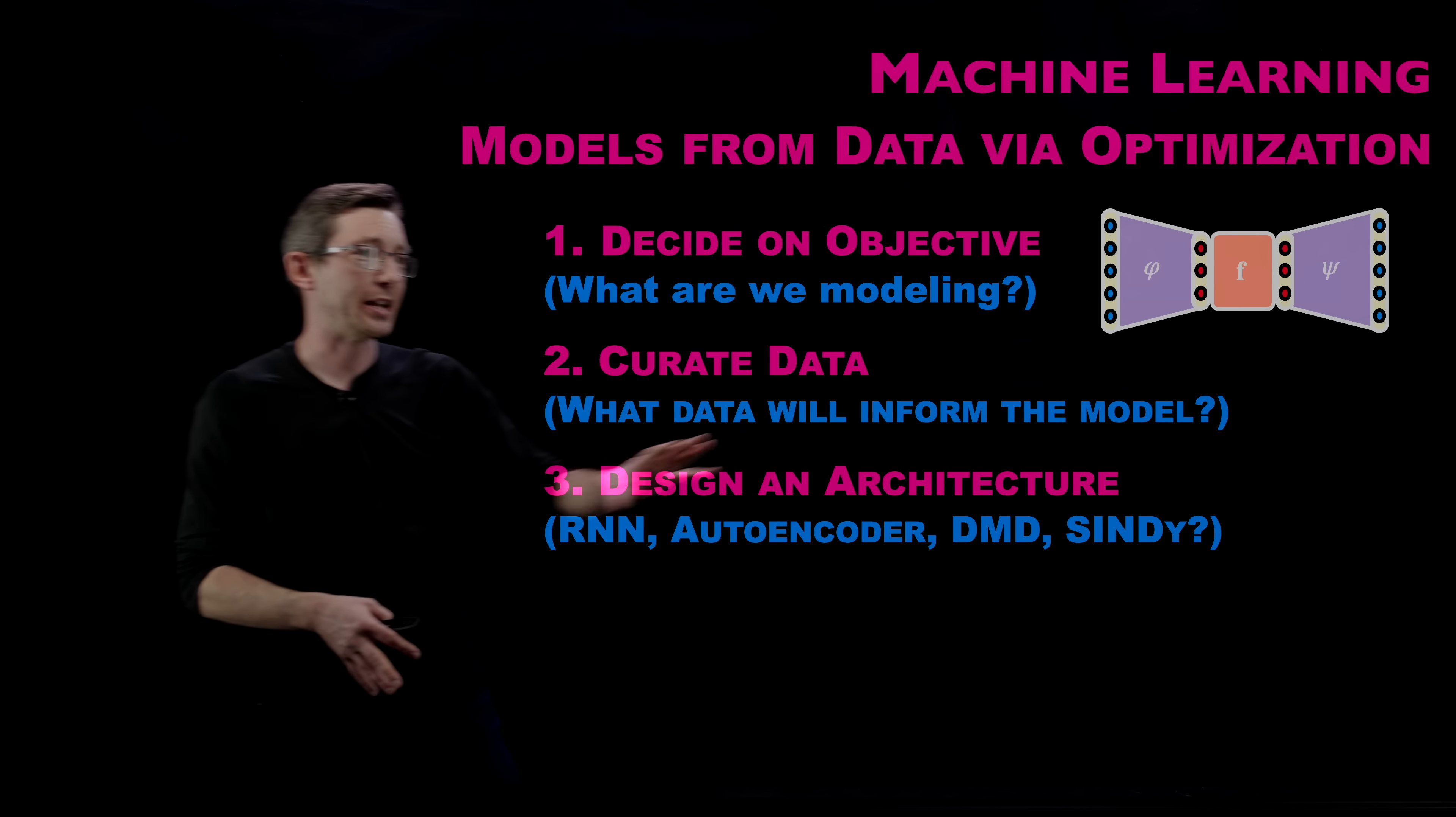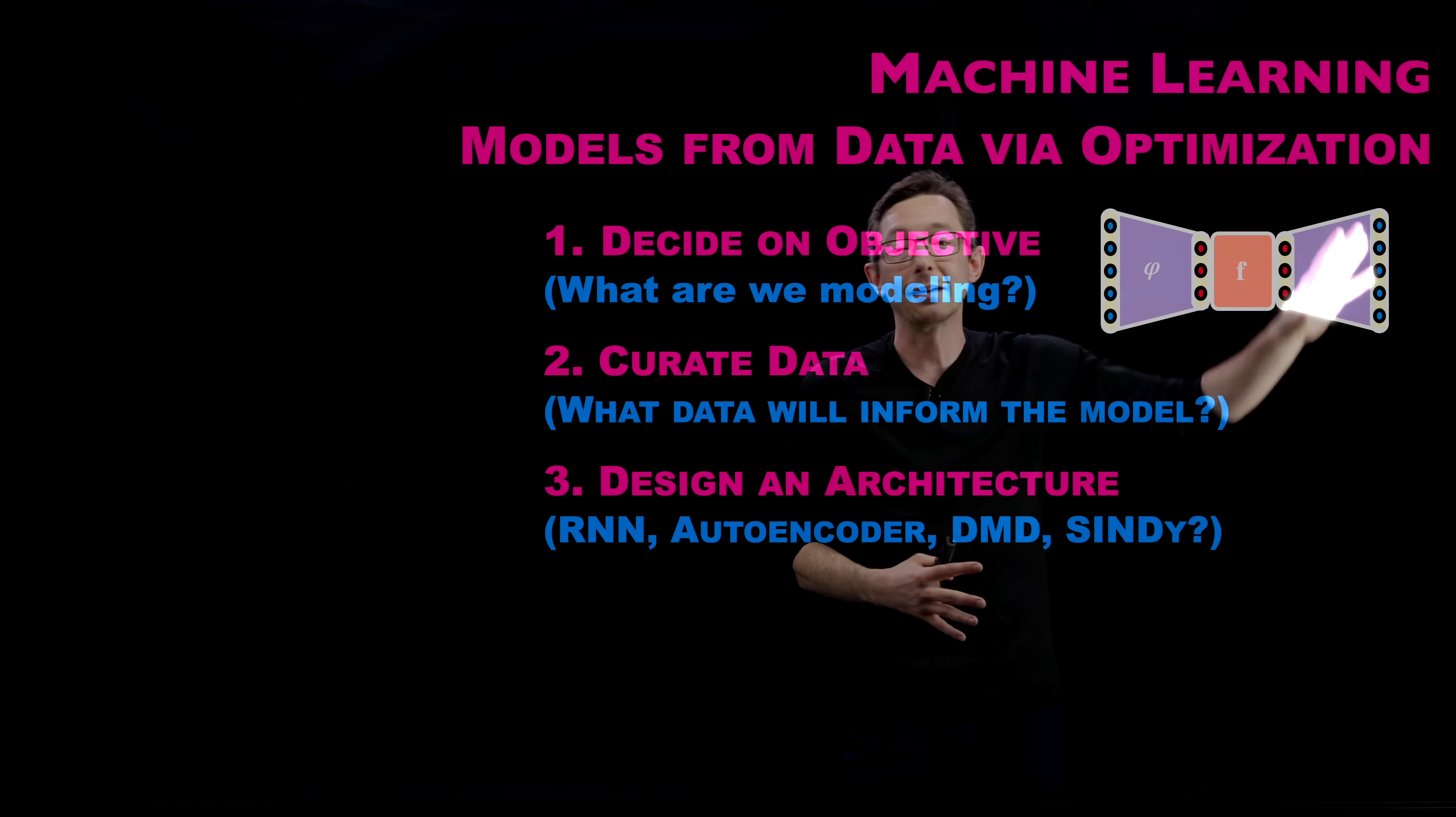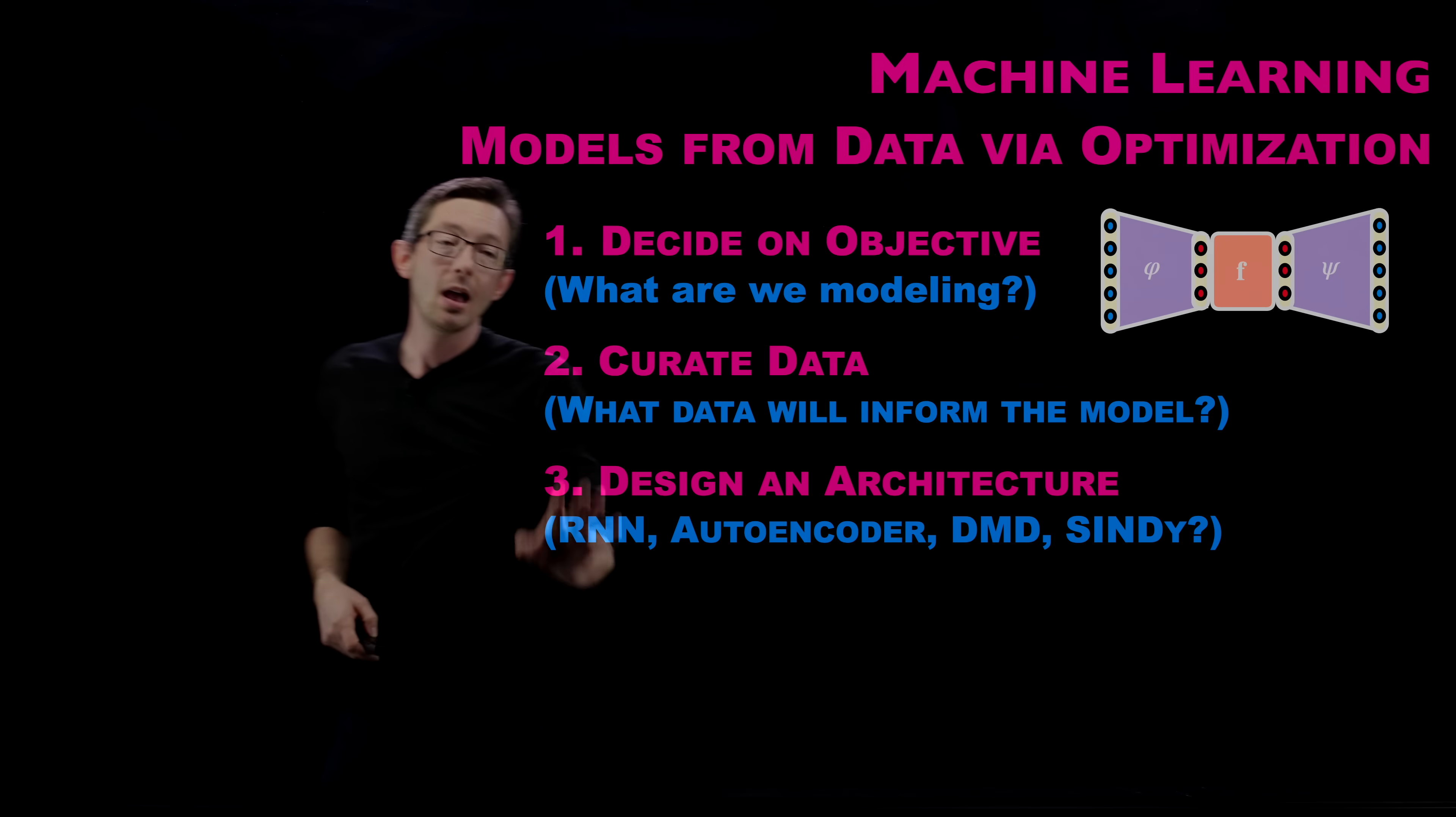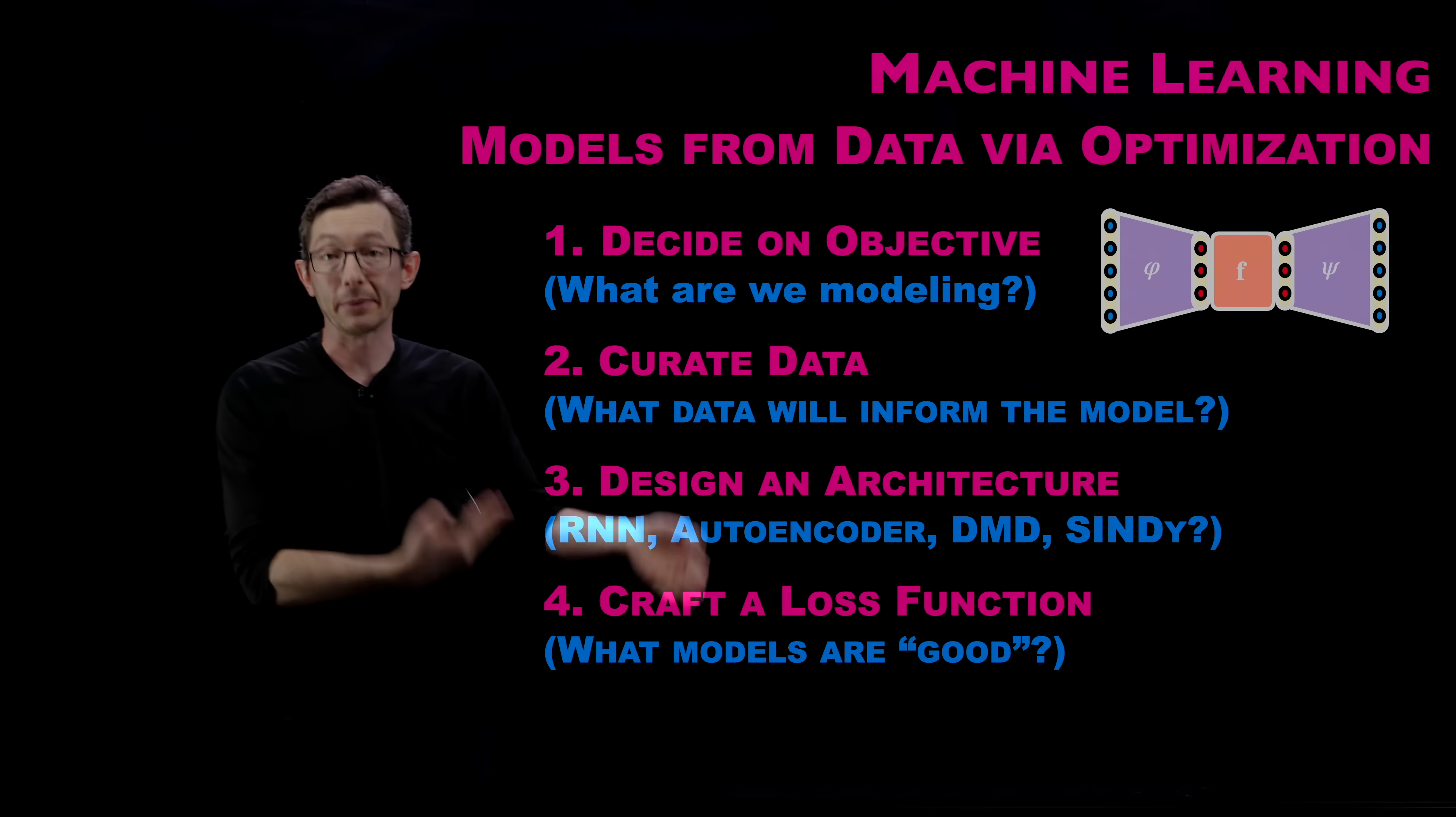Once we have an architecture, this is an example of an architecture. It's a specific neural network with a specific shape and structure that I think might be good for learning certain types of input-output relationships. Once I've done that, now I get to write down a loss function or an objective function that I'm going to optimize over.